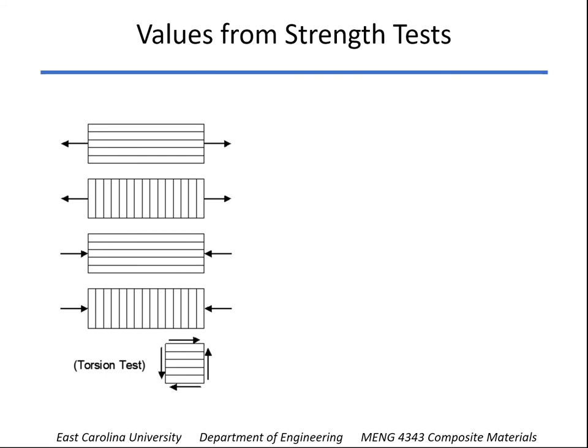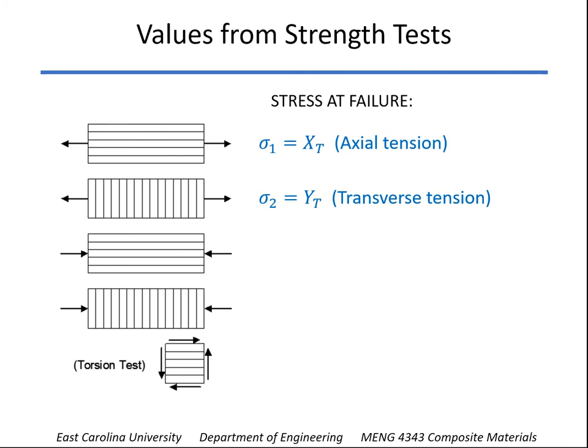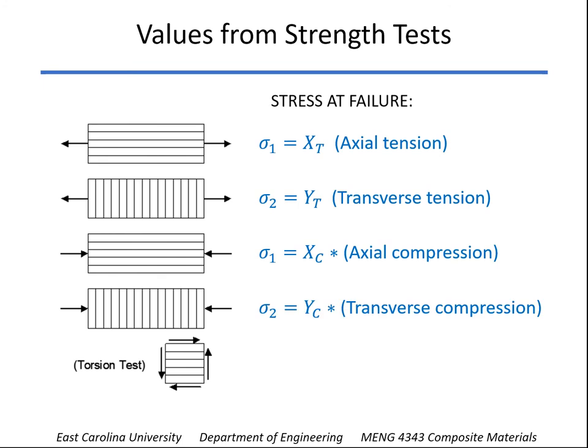Let's talk about doing some simple strength tests. In the first one, the fibers are all in the axial direction and we pull axially — a simple tensile test. When sigma1 reaches its failure value, we call that failure strength capital X sub T, the axial tensile strength. If the fibers are 90 degrees to the direction of loading, the failure is for sigma2 and its value would be Y sub T. We do similar compression tests: in the axial direction, when sigma1 reaches X sub C, that's the axial compressive strength. The transverse compressive strength is found by compressing transverse to the fibers. Finally, with a torsion test you can find the in-plane shear strength tau12, capital S.